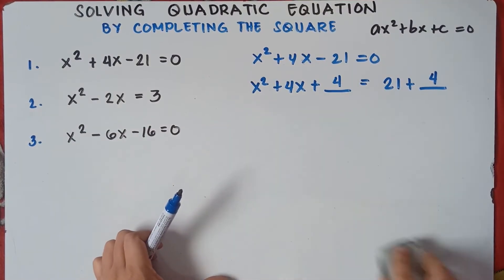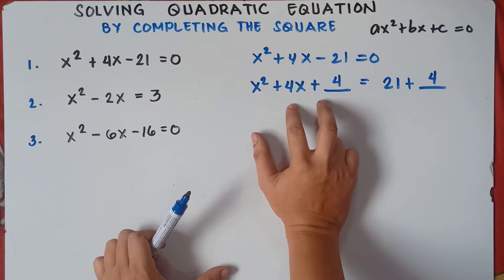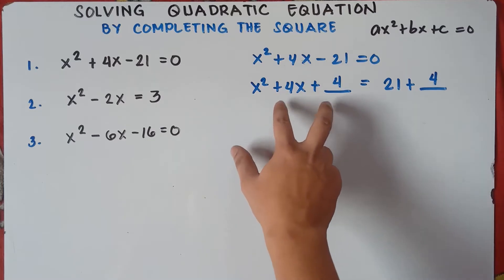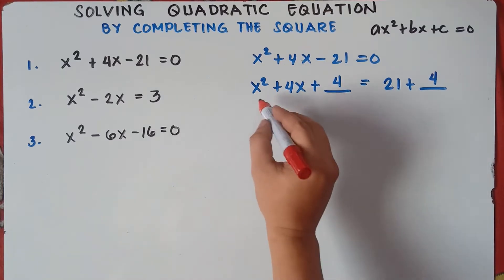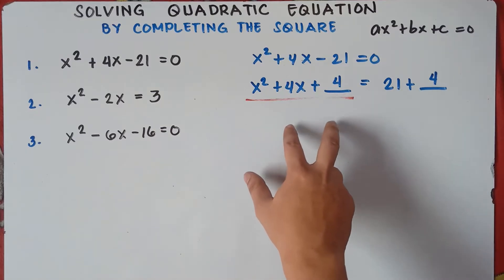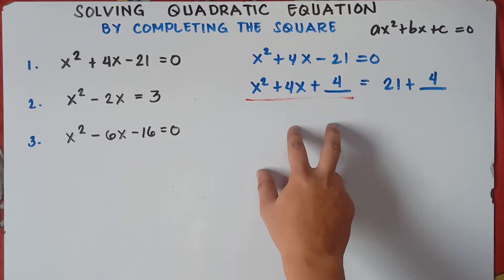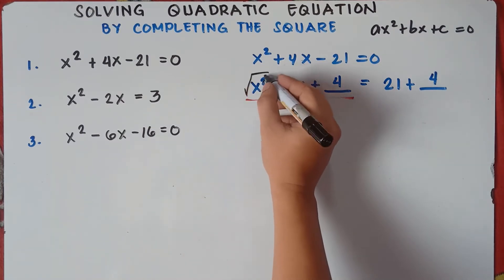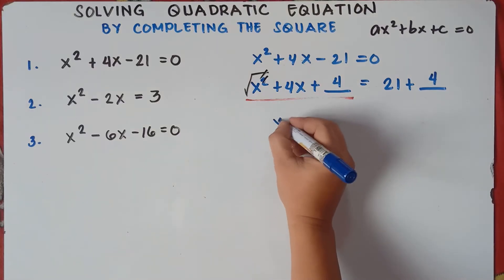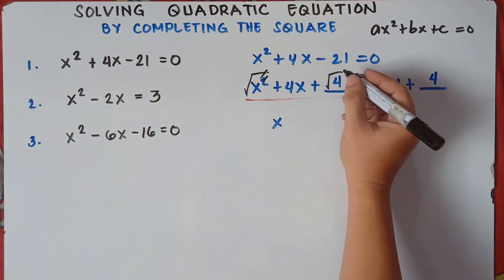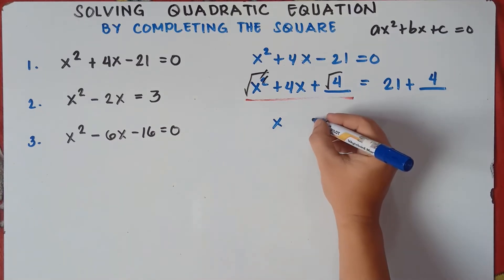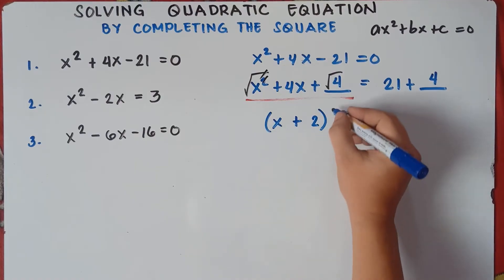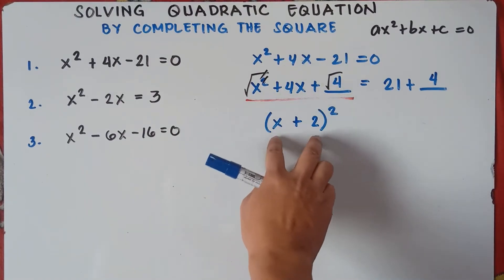Next step is we need to make this perfect square trinomial into a squared binomial. When you do the completing the square, your answer on the left side of the equal sign is what we call a perfect square trinomial, which we can convert into a squared binomial easily by getting the square root of the first term — square root of x squared is x — and the square root of the last term — square root of 4 is 2 — then copy the sign of the middle term, positive, and put quantity squared. That's it!